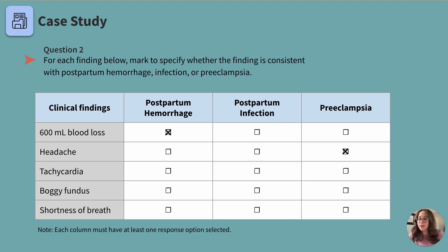Tachycardia can be seen with all three conditions — postpartum hemorrhage, infection, or preeclampsia — because the heart rate rises when the body is stressed. A boggy fundus is consistent with postpartum hemorrhage; this is when the uterus is enlarged, soft, and typically contains a significant amount of blood. Shortness of breath can be seen with postpartum hemorrhage and preeclampsia. Let's move on to question three.